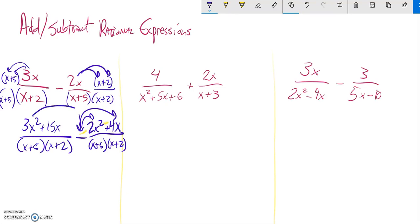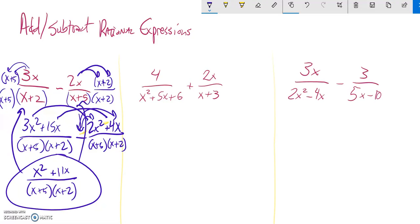Let's see what I have. 3x squared minus 2x squared is 1x squared, 15x minus 4x is 11x, and that's over x plus 5 times x plus 2. So this fraction is this fraction minus that fraction.